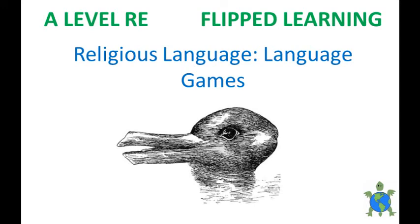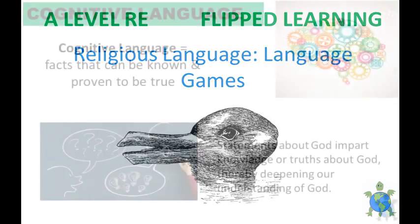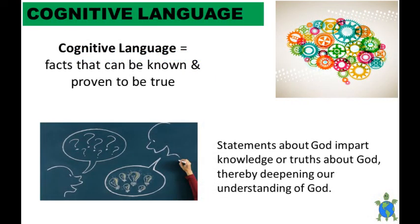So far in this mini-series we've looked at whether religious language is cognitive — that is factual — or non-cognitive, language that's not intended to be taken literally. If you remember, both Ayer and Flew dismissed religious language as being meaningless because they assumed that the statements believers make are cognitive. As such they fail to stand up to logical scrutiny and they cannot be verified or falsified. Both Ayer and Flew had a realist approach to language.